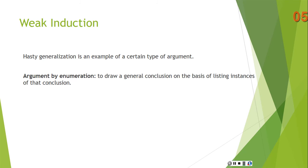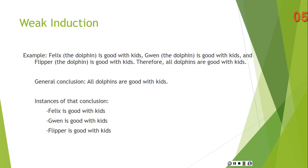Hasty generalization is an example of a certain type of argument called argument by enumeration — drawing a general conclusion on the basis of listing instances of that conclusion. For example: 'Felix the dolphin is good with kids. Gwen the dolphin is good with kids. Flipper the dolphin is good with kids. Therefore, all dolphins are good with kids.' You have instances — Felix, Gwen, and Flipper — supporting the general conclusion.